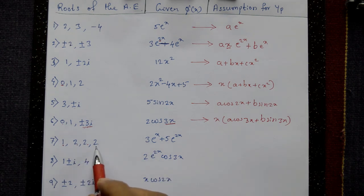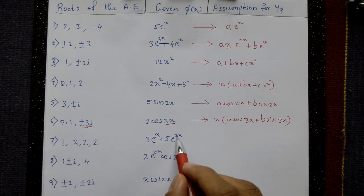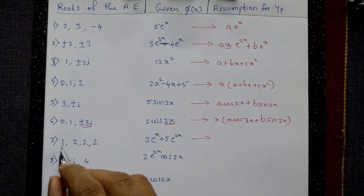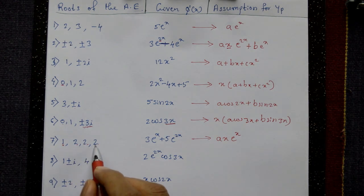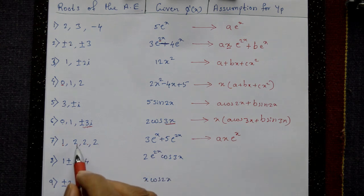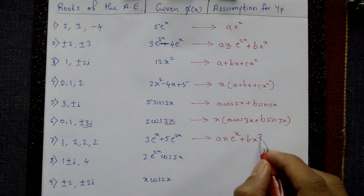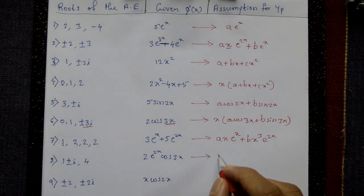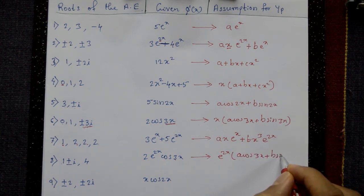Example 7: roots of the auxiliary equation are 1, 2, 2, 2, 2 — so 2 appears three times. Both 1 and 2 appear in φ(x). Since 1 appears once, assume yp includes A·x·e^x; since 2 appears in φ(x) but is a root three times (thrice), assume B·x³·e^(2x). Example 8: roots are 1 ± i with α = 1, and 3 is not present, so assume yp = e^(2x)·[A·cos(3x) + B·sin(3x)].